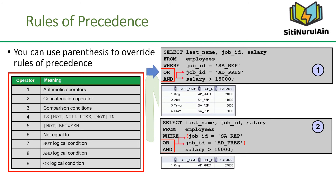The first example shows the precedence of the AND operator. There are two conditions: the first is that the job ID is AT_PRES and the salary is greater than $15,000; the second is that the job ID is SA_REP. Therefore, the SELECT statement selects the row if an employee is a president and earns more than $15,000, or if the employee is a sales representative. The second example uses parentheses: the first condition is that the job ID is AT_PRES or SA_REP, and the second condition is that the salary is greater than $15,000. Therefore, the SELECT statement selects the row if an employee is a president or a sales representative and earns more than $15,000.